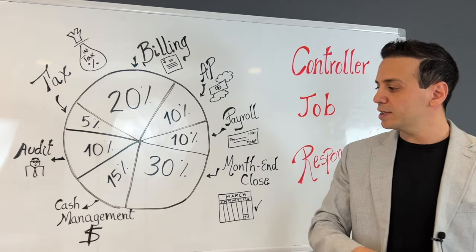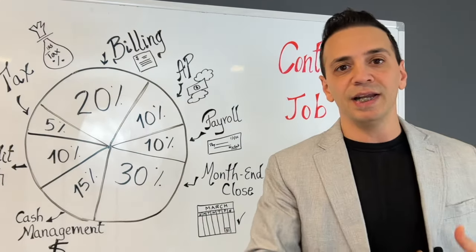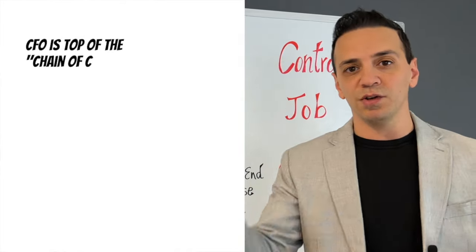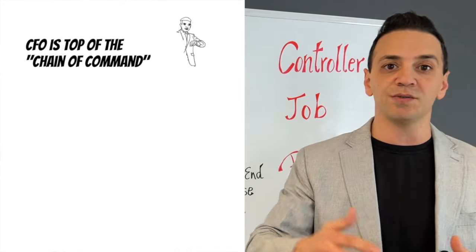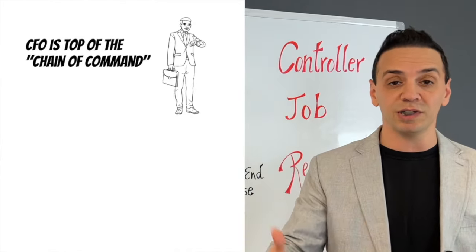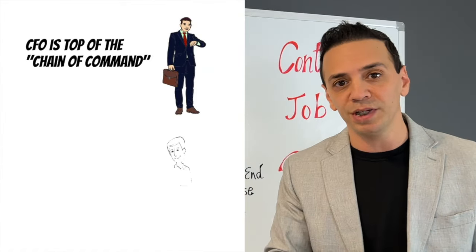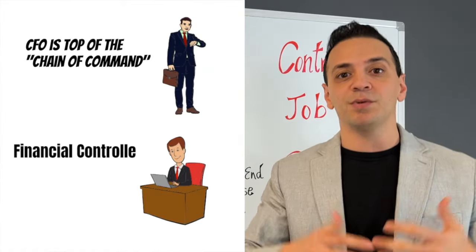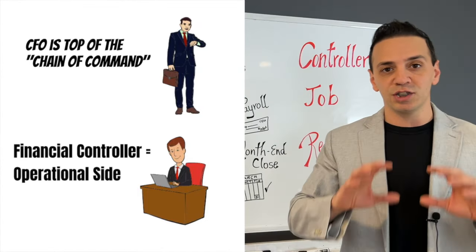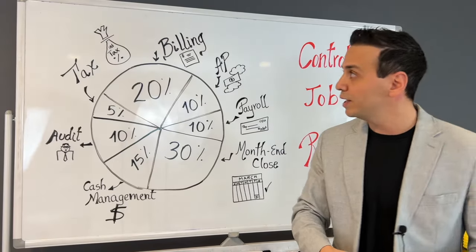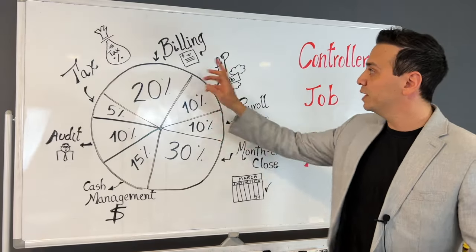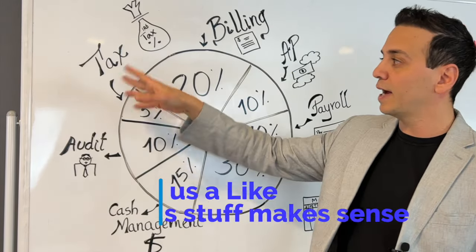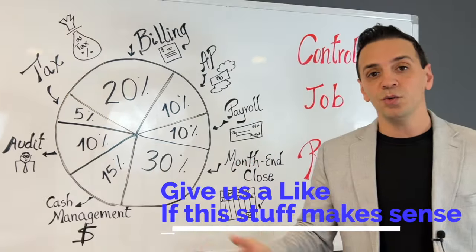In general, in a company, the CFO is the highest level of authority in finance. The CFO is responsible for the financial well-being of the company, whereas the financial controller is the operational side. My role is to make sure that everything is running smoothly in terms of billing, accounts payable, payroll, month-end close, cash management, audit, and tax. We'll go through all of these areas.